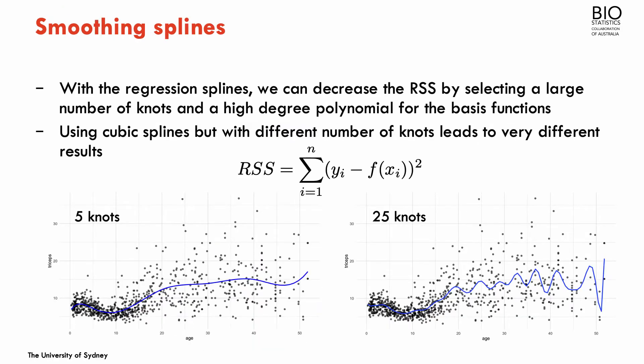I think it's easy to understand that the more knots we place, the more flexible curve we will have. Basically, the residual sum of squares that summarizes the fitness of the curve to the data will be dependent on the number of knots. If we place a lot of knots, we'll be reducing the residual sum of squares. Obviously, it also depends where I'm going to place those knots.